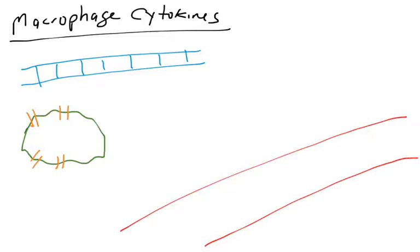We're going to start with cytokines being released out of macrophages. These cytokines might be released by other cells, but we'll start with macrophages. This goes to communication — one cell wants to tell another cell what to do.